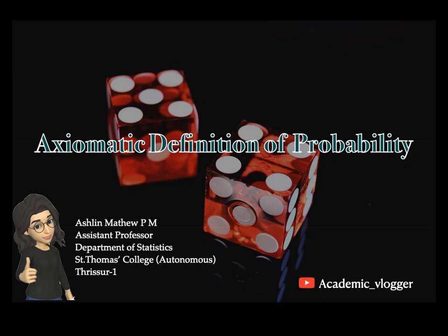Hi everyone, it's myself Ashlyn Math here and I'm going to talk about the axiomatic definition of probability. In the previous videos we covered the classical definition of probability and the statistical definition of probability and some of their limitations. Because of those limitations we found those definitions to be incomplete, so here is a better definition: the axiomatic definition of probability.